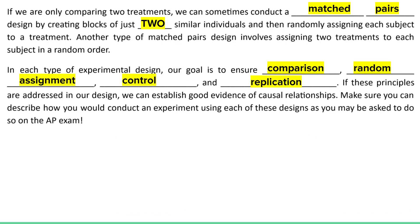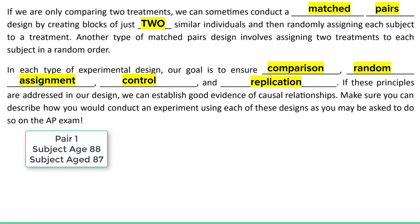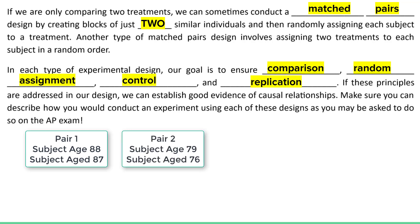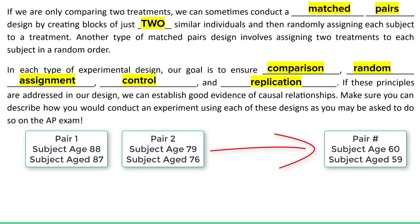If we're only comparing two treatments, sometimes we can conduct a matched pairs design. This is a very specific type of blocked experiment where there are just two individuals in each block. Back to the blood pressure and age example — a matched pairs design would assign the two oldest people in the study: one to treatment A, one to treatment B. Then the next two oldest individuals, one treatment A, one treatment B, all the way down to the two youngest individuals where one gets treatment A and one gets treatment B.